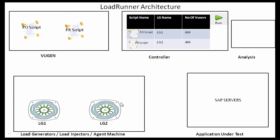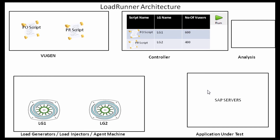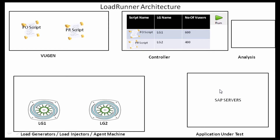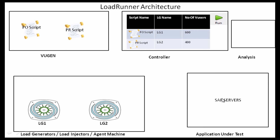This box represents the VUgen. This box is the Controller. This box is the Analysis. And this box represents the Load Generators — I have put two here to prove you can have more than one, but you could have three, four, or five; most of the time you get away with one. This is our application under test — a SAP GUI application. This is the SAP servers, which is your application under test. The SAP application under test usually contains an app server, an Oracle database server, and a HANA server. I won't put all those servers here because we will discuss SAP architecture later. I have put only one SAP server box here to keep the LoadRunner architecture diagram uncluttered.